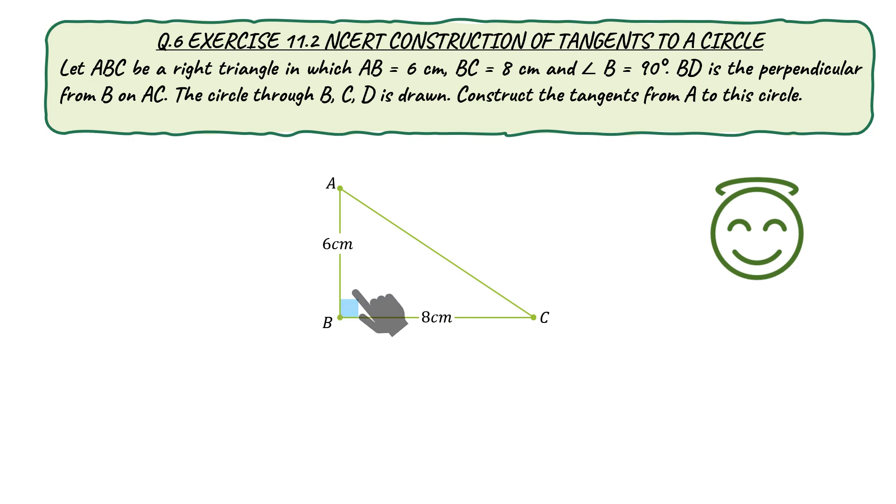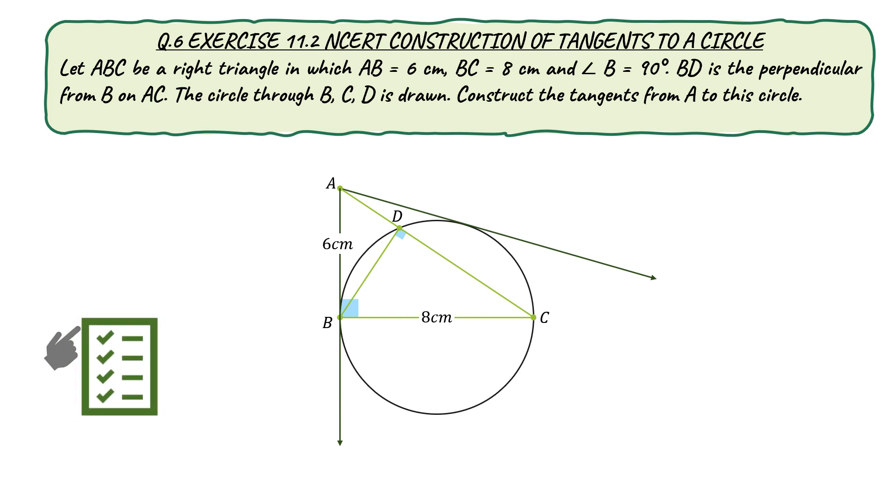BD is perpendicular from point B to side AC. The circle through points B, C, D is drawn. Then, we have to construct the tangents from point A to the circle passing through points B, C and D. You will learn step by step method to draw the construction.